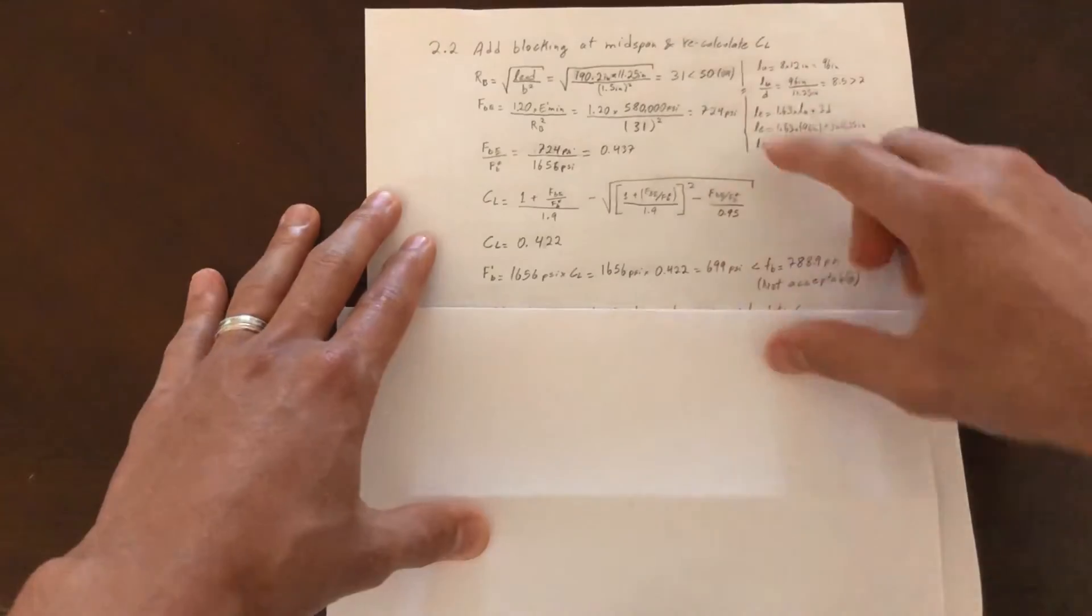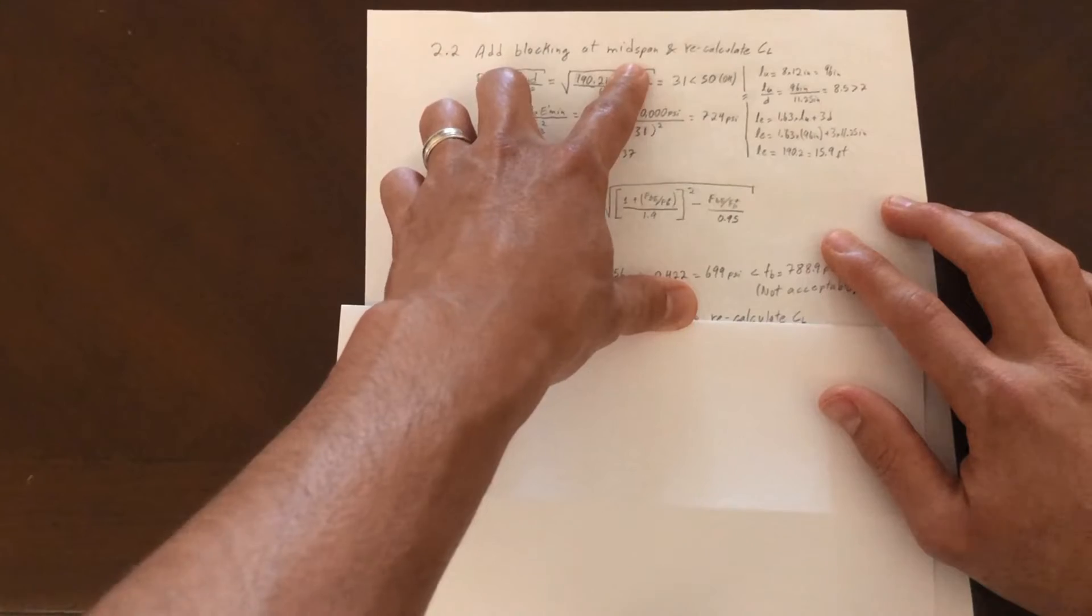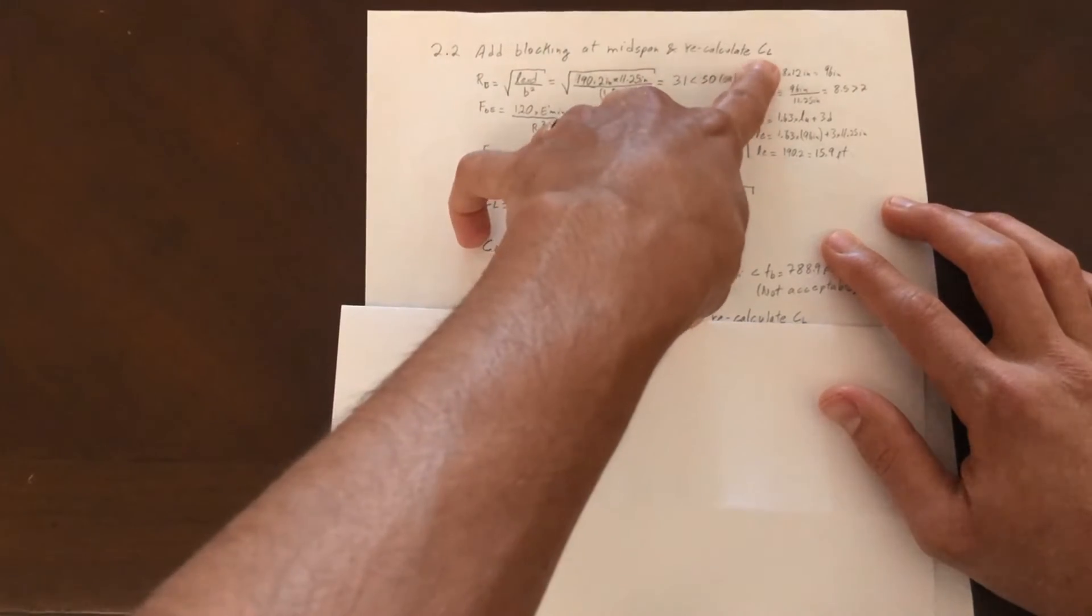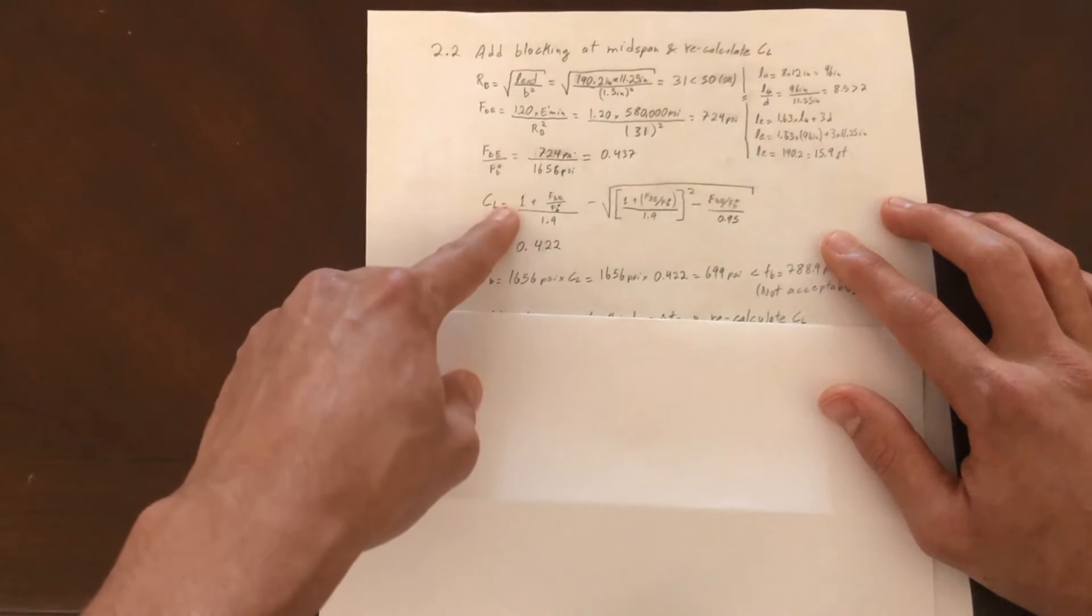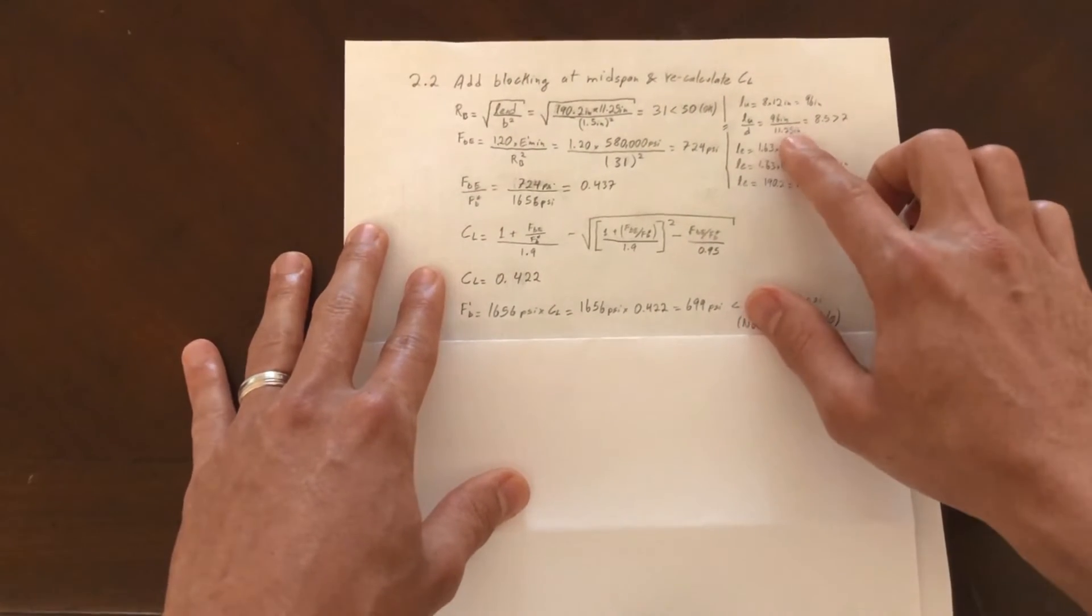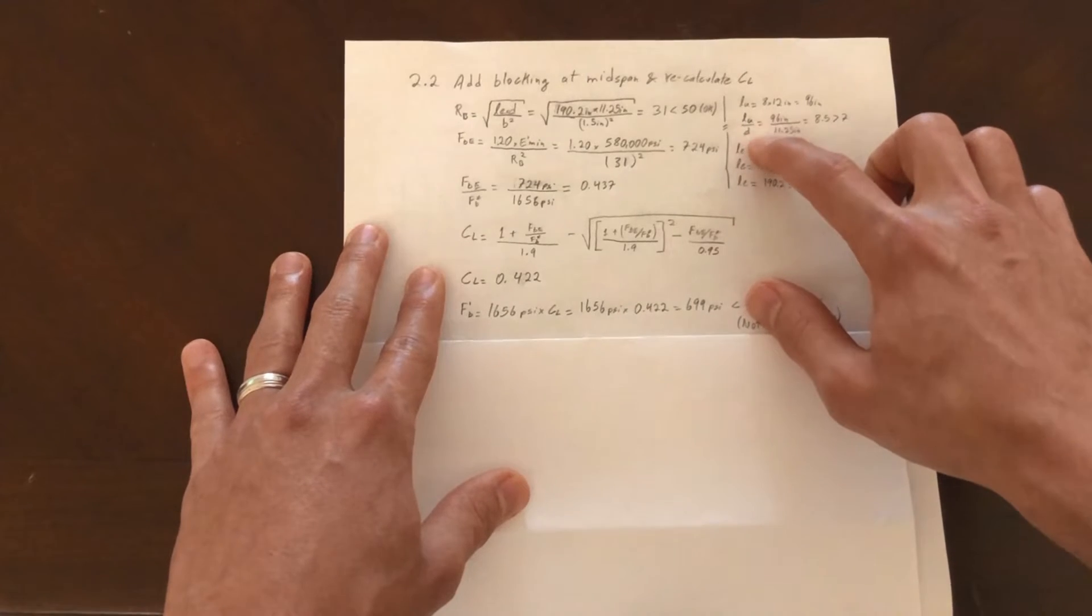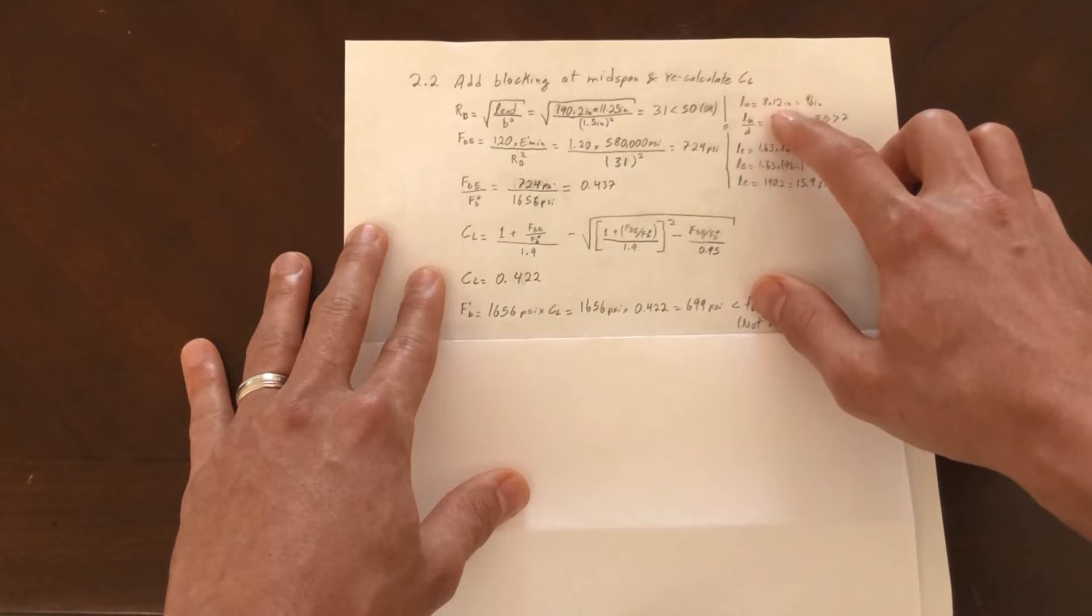Now this did not work, right? Not even close. So let's add blocking. In other words, let's reduce our effective length. We are going to add blocking first at mid-span and then we're going to recalculate C sub L. The formulas are all the same, so I'm not going to go over all of them again.